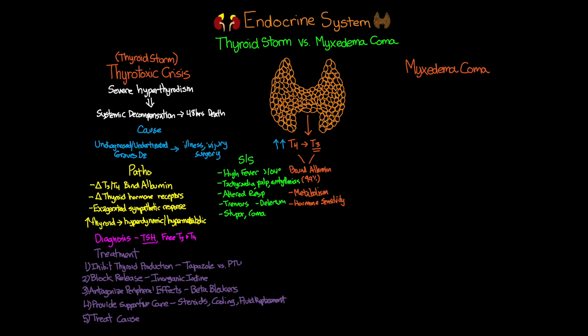Now let's move on to myxedema coma, which really is a life-threatening emergency. On the opposite side from thyroid storm, myxedema coma is essentially severe hypothyroidism. A stressor increases the body's metabolism, depleting thyroid hormone stores and ultimately leading the patient into crisis. This is seen more often in women and the elderly, and carries a mortality rate of 20 to 50 percent.